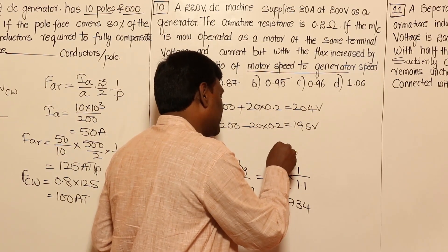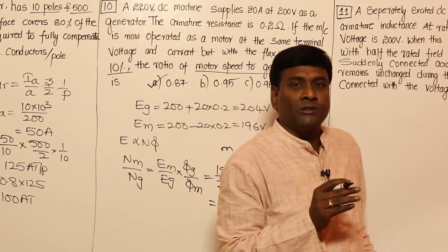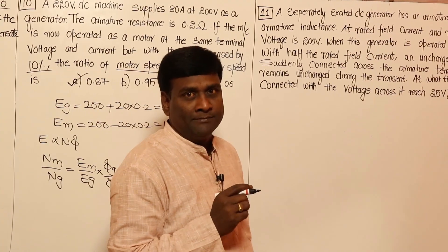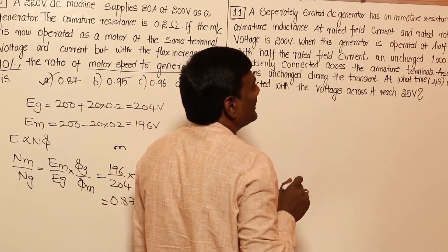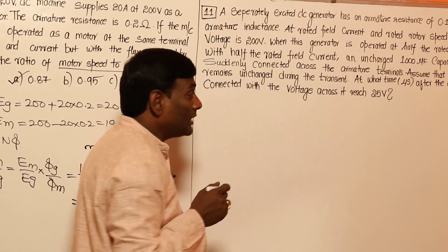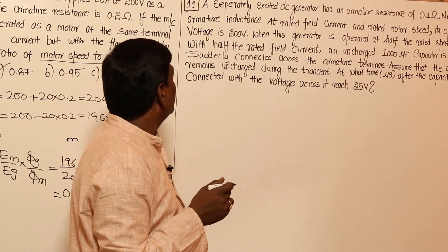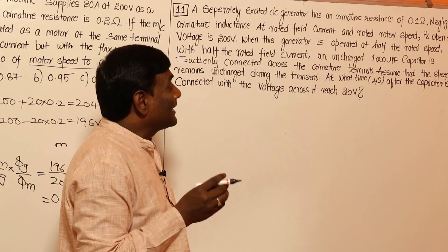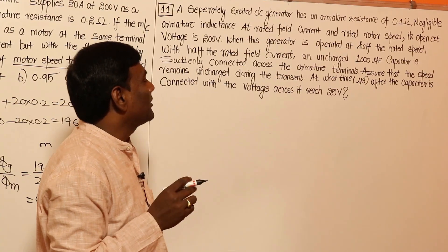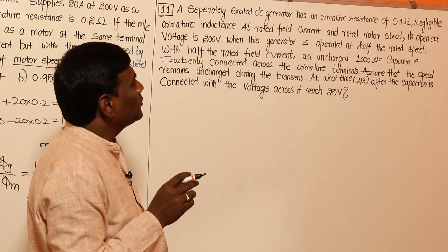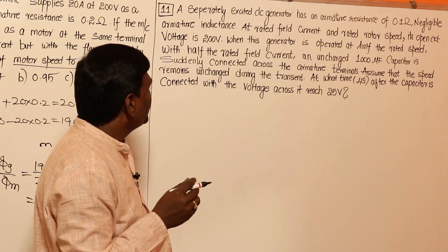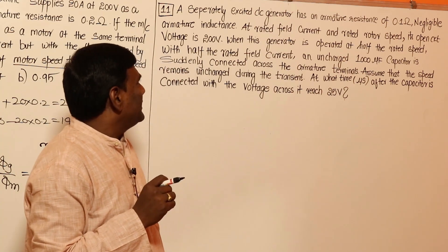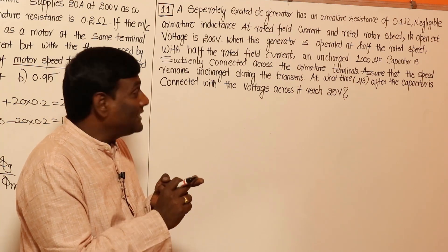Next problem: A separately excited DC generator has armature resistance of 0.1 ohm and negligible armature inductance. At rated field current and rated rotor speed its open circuit voltage is 200 volts. When operated at half the rated speed with half the rated field current, an uncharged 1000 microfarad capacitor is suddenly connected across the armature terminals. At what time (in microseconds) after connection will the voltage across the capacitor reach 25 volts?